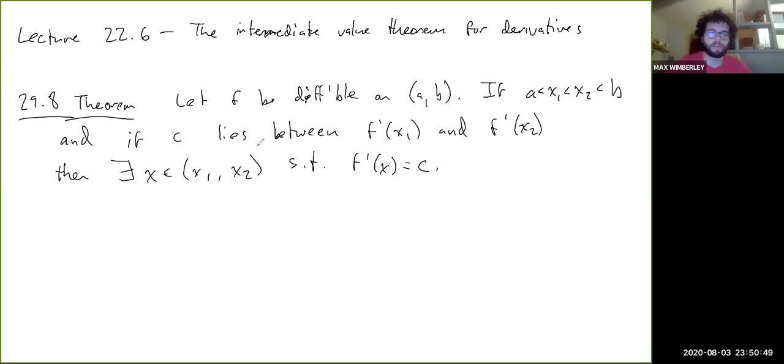So c is the intermediate value here. It plays the role of y in the intermediate value theorem from before. It's a value between the values of f' at these two points, and the point is that there's an x value in between those two points where f' actually achieves this intermediate value.